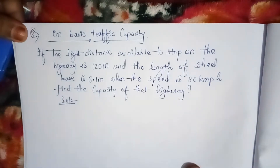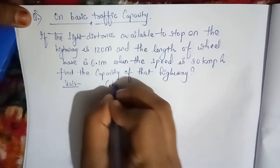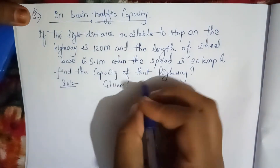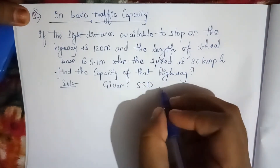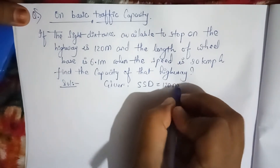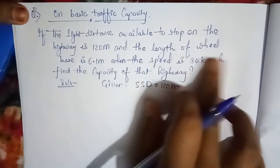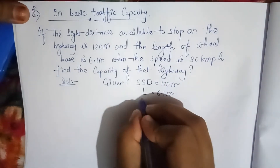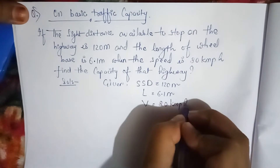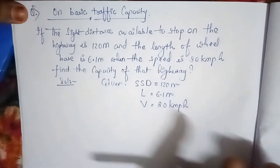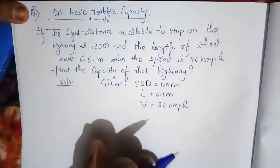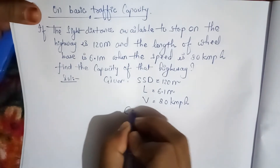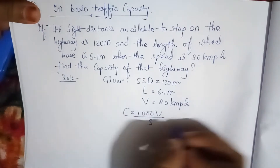Let us write the given data. Stopping sight distance, SSD = 120 meters. Length of wheelbase, L = 6.1 meters. Speed V = 80 kmph. You need to find capacity C. The formula for basic capacity is C = 1000V / S, where V is in kmph.